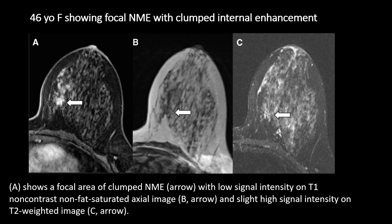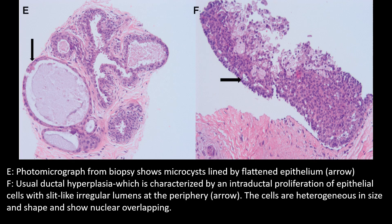Here is a case of a 46-year-old female showing focal non-mass enhancement with clumped internal enhancement. Panel A shows a focal area of clumped non-mass enhancement with low signal intensity on T1 non-contrast, non-fat-saturated axial image in panel B, with slight high signal intensity on T2-weighted image in panel C. In panel E, the photomicrograph from biopsy shows microcysts lined by flattened epithelium. In panel F, UDH is characterized by an intraductal proliferation of epithelial cells with slit-like irregular lumens at the periphery. The cells are heterogeneous in size and shape and show nuclear overlapping.